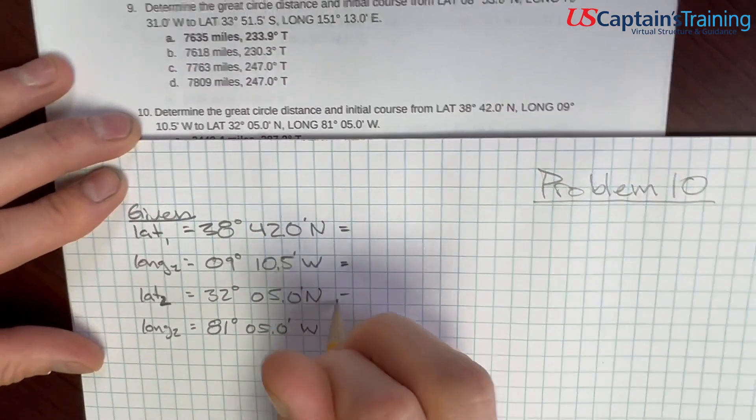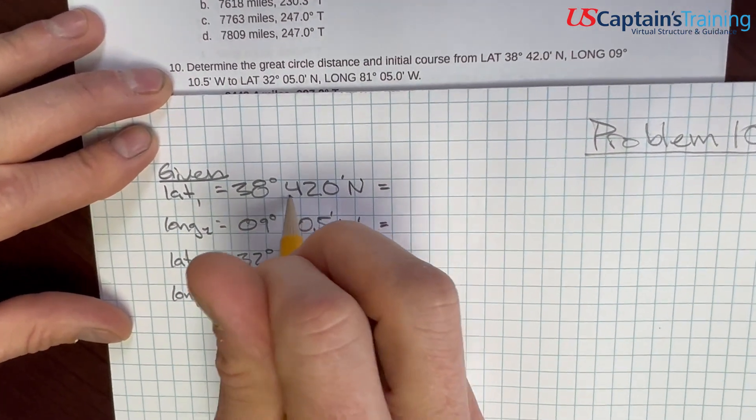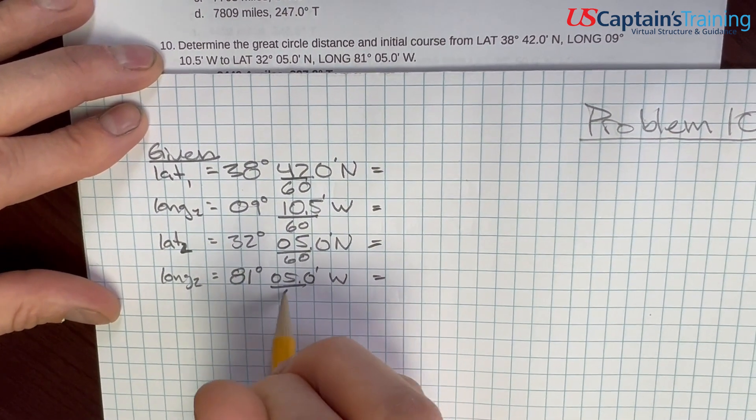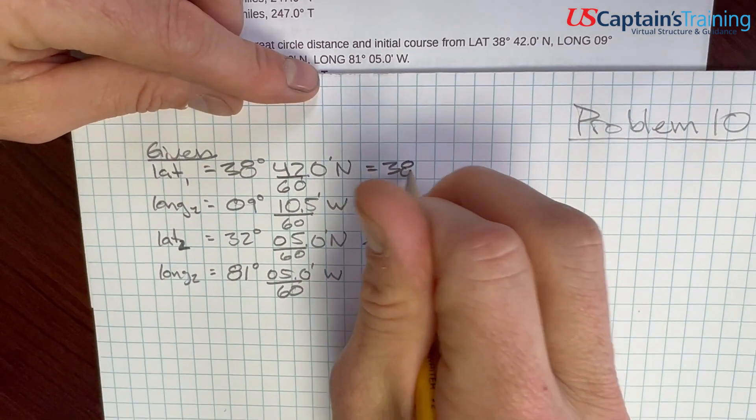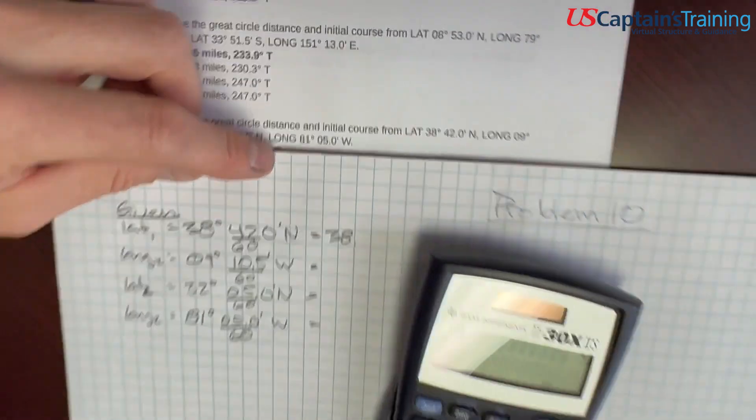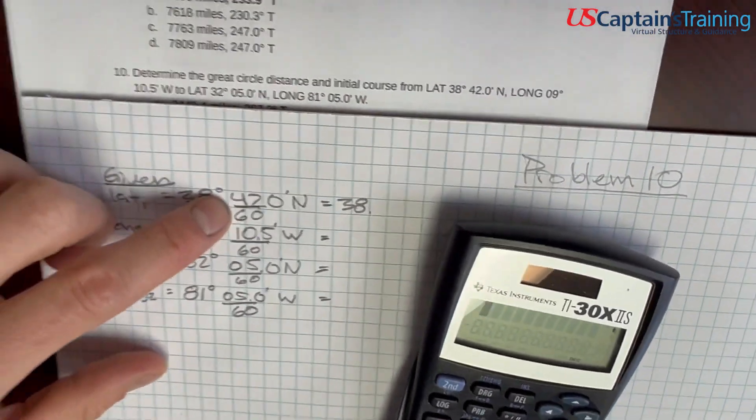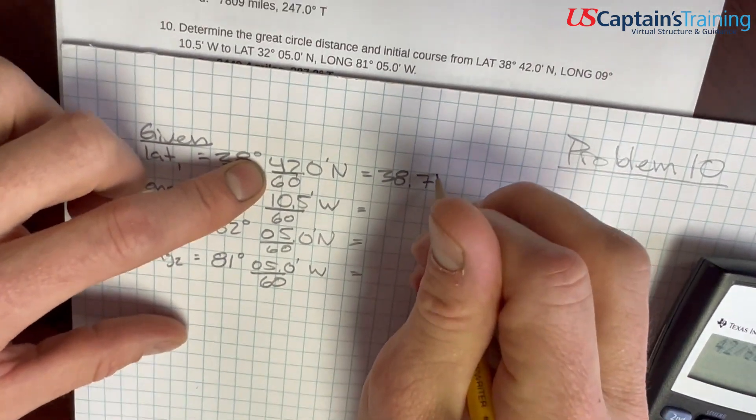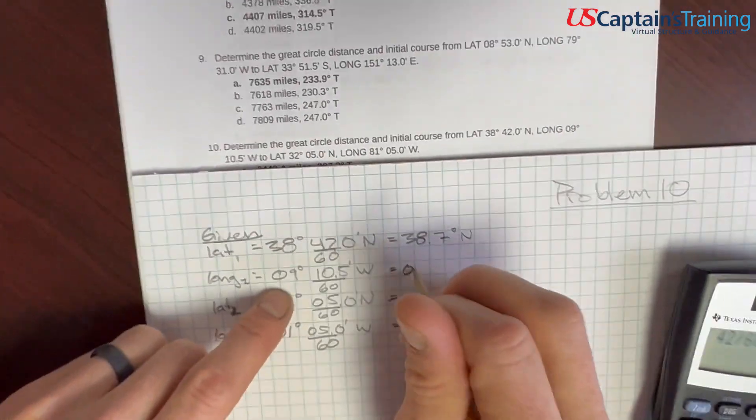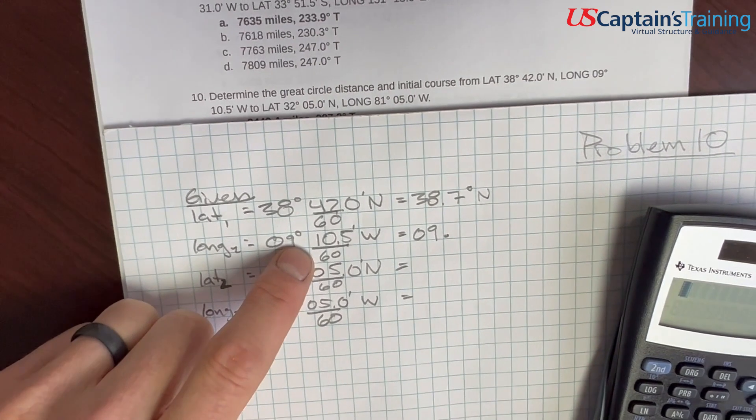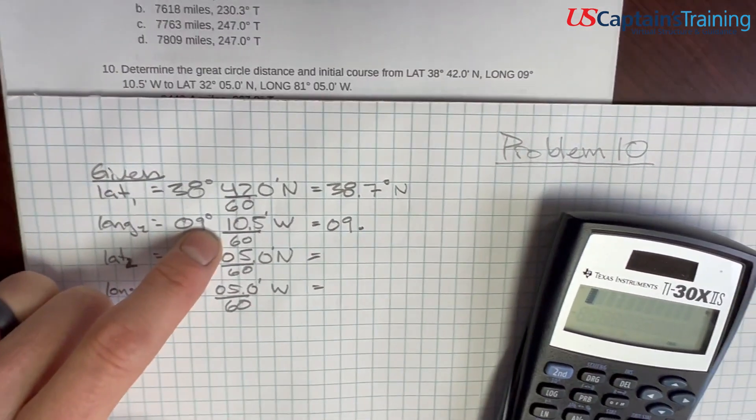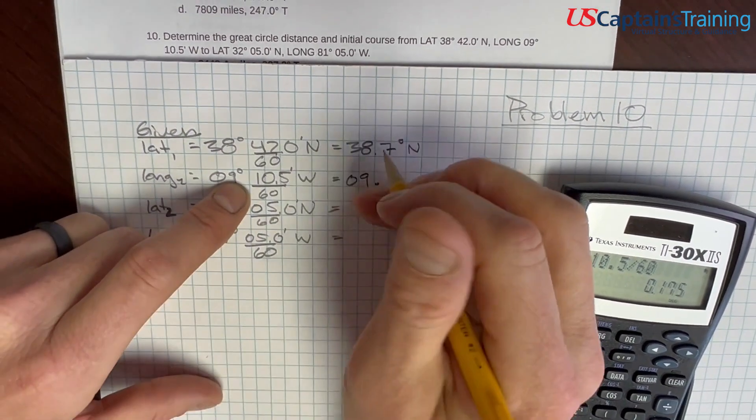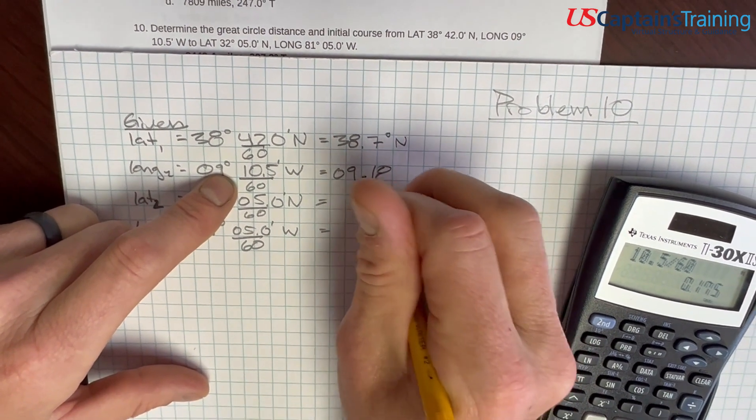So all of these, we need to put all of these now in degrees only. So divide the minutes by 60 in every case. What we're going to get is 38 point, so 42 divided by 60, enter, 0.7 degrees north. And then in this case we have 9, 10.5 divided by 60, enter 0.175. I'm going to say 0.18 degrees west.